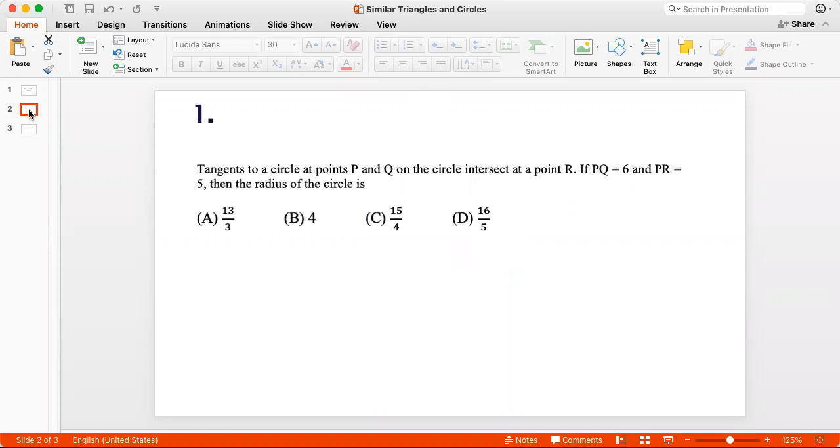Tangents to a circle at points P and Q on the circle intersect at a point R. So let's draw this. Let this be the circle. Let this be the point R. Then this is one tangent at point P and this is the other tangent at point Q. This is the radius and this would be perpendicular to the tangent. PQ is 6, so this straight line is 6 and PR is 5.